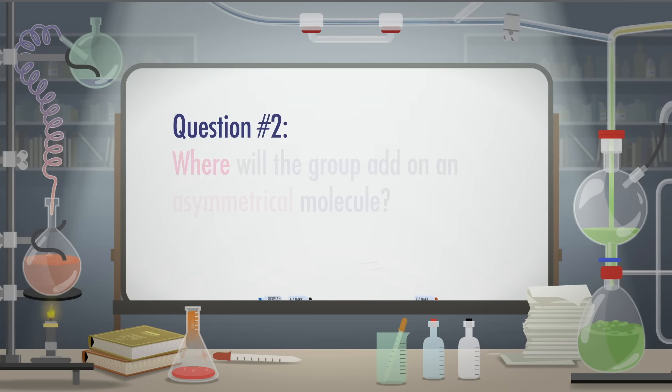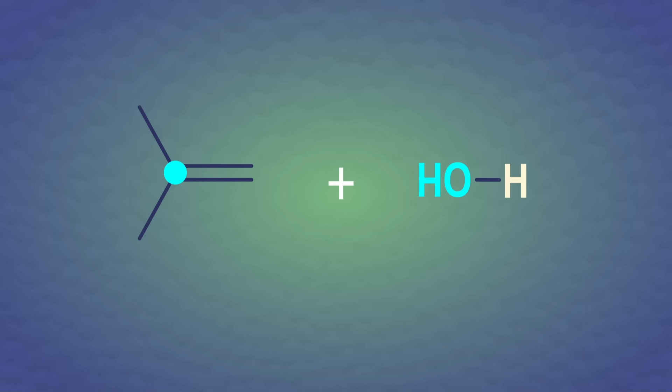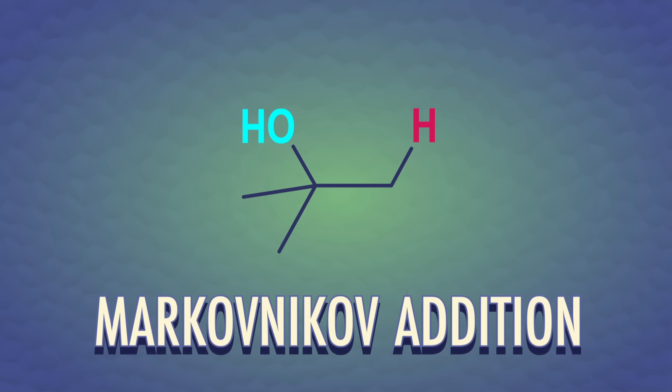Question number two: Where will the group add on an asymmetrical molecule? For example, the left-hand carbon of the double bond in this molecule is bonded to three carbons, and the right-hand carbon is bonded to two hydrogens. As a refresher from episode 14, we learned Markovnikov's rule, which tells us that a proton adds to the carbon of the double bond that has the most hydrogens. We call that Markovnikov addition.